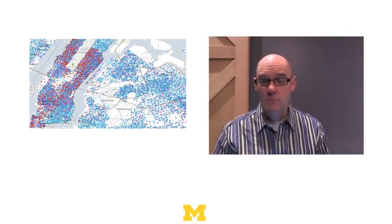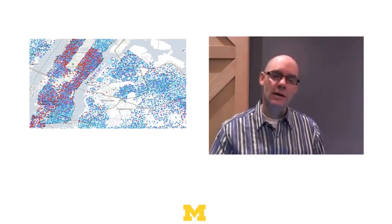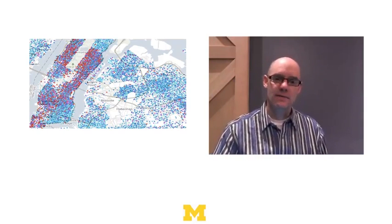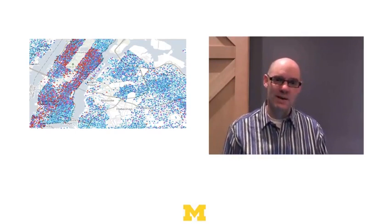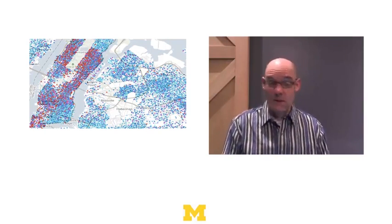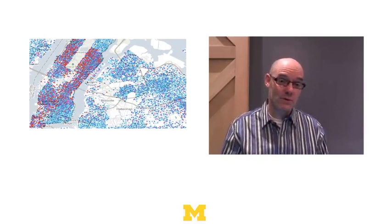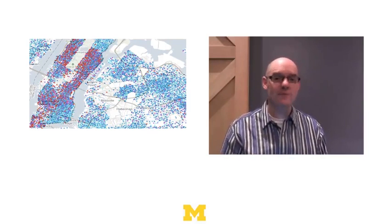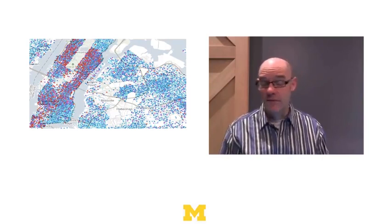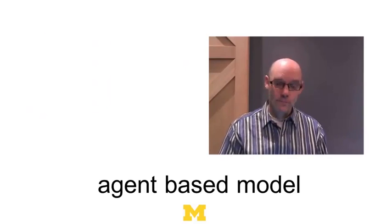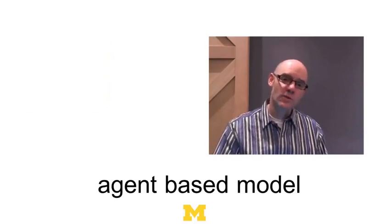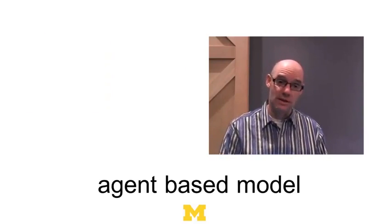This is what Schelling wanted to understand — he wanted to construct a model to make sense of this. You might say we don't need a model; maybe people are racist and don't want to live near people who don't look like them. Well, that's exactly what Schelling set out to explore using a model. The kind of model he constructs is called an agent-based model.